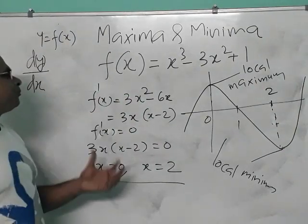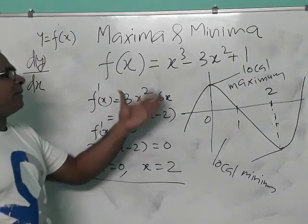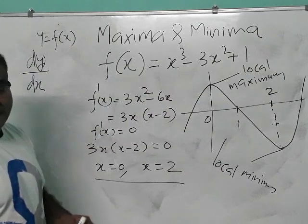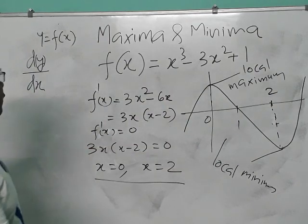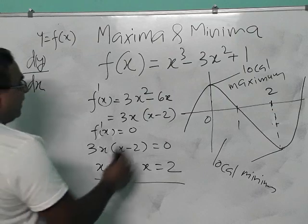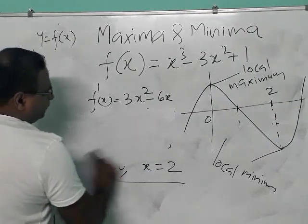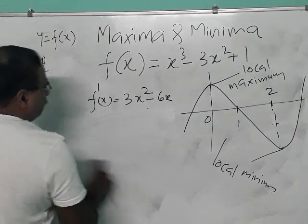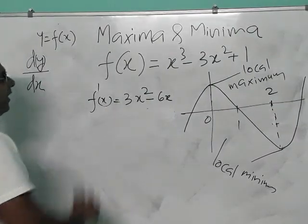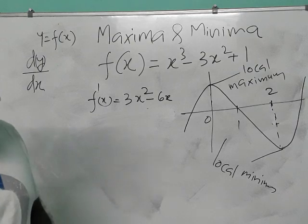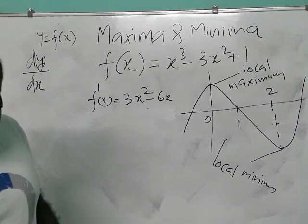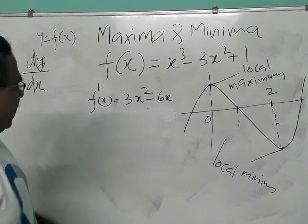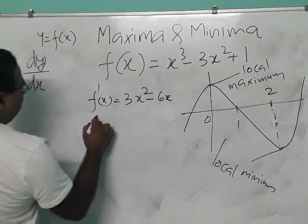But we didn't identify which one is the local maximum and which one is the local minimum. We got the values by the first order derivative test. To identify which is maximum and which is minimum, we need to use the second order derivative test.